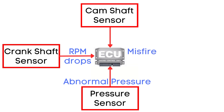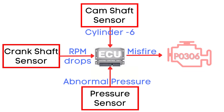The Camshaft Position Sensor helps the ECU determine which specific cylinder is experiencing the misfire. And that's how the P0306 trouble code is triggered.